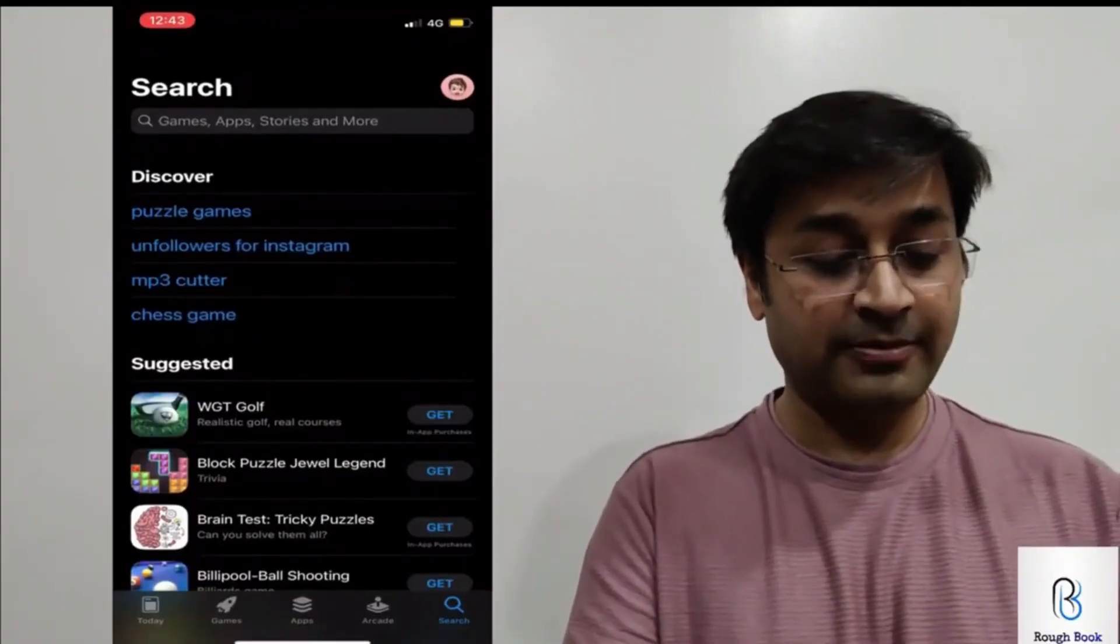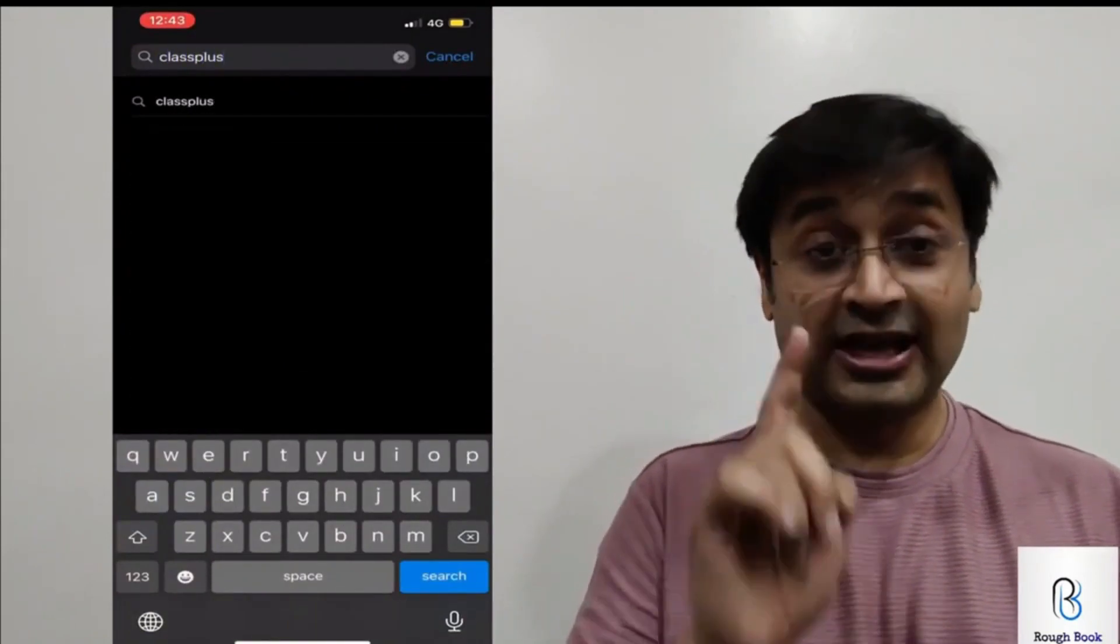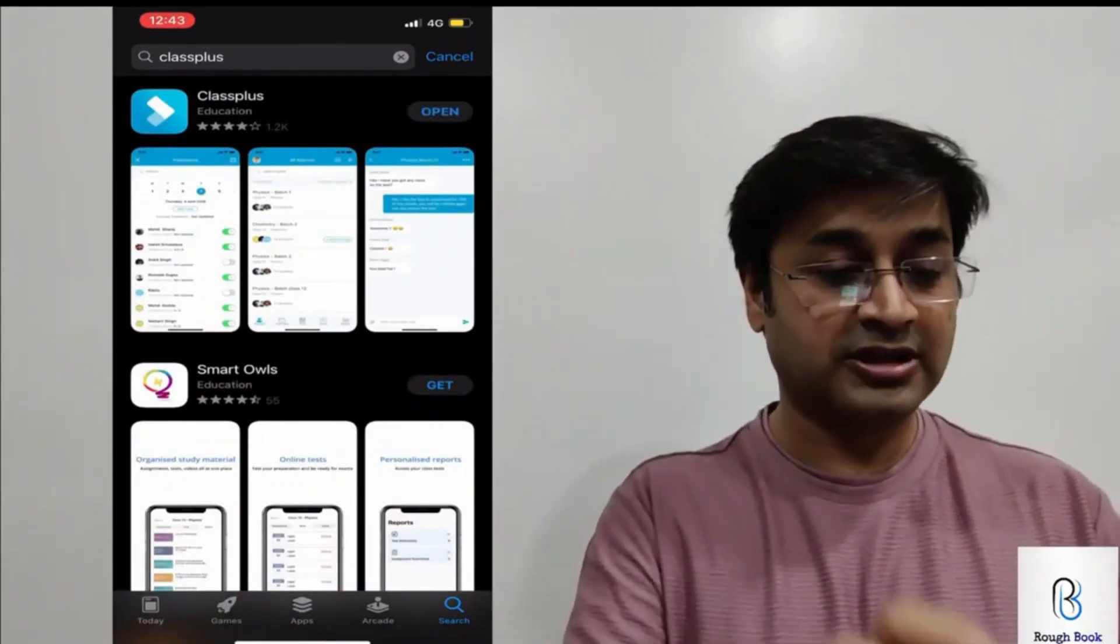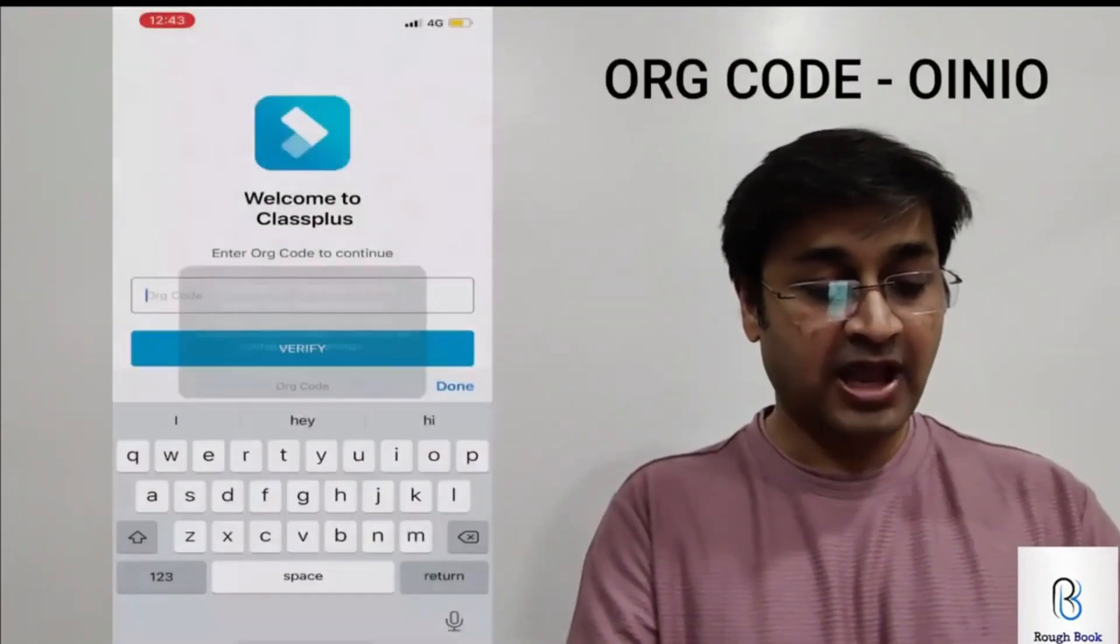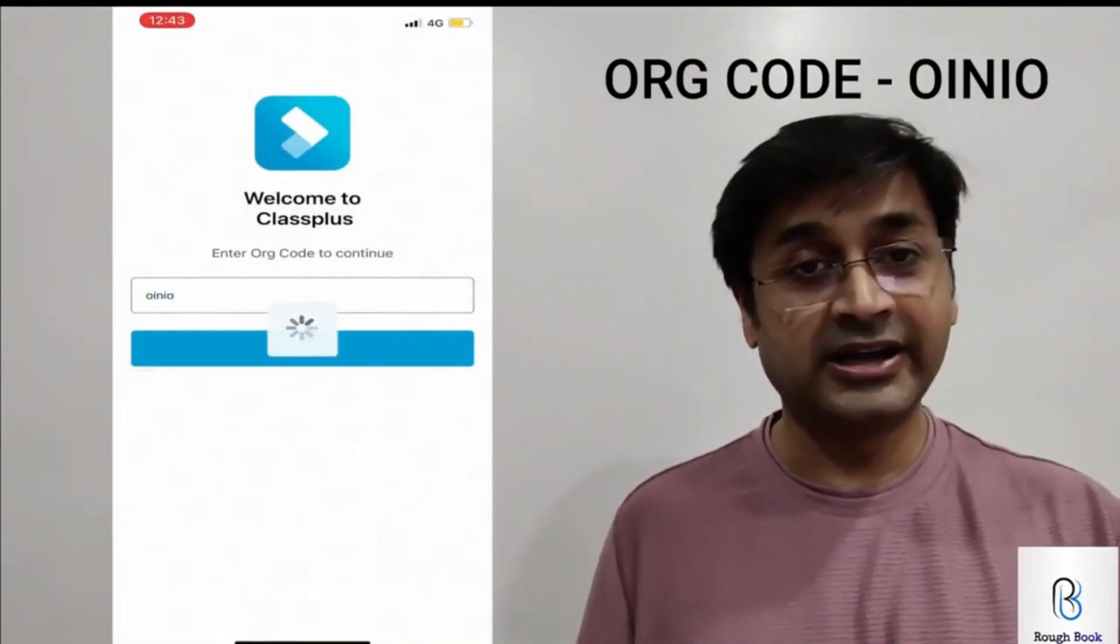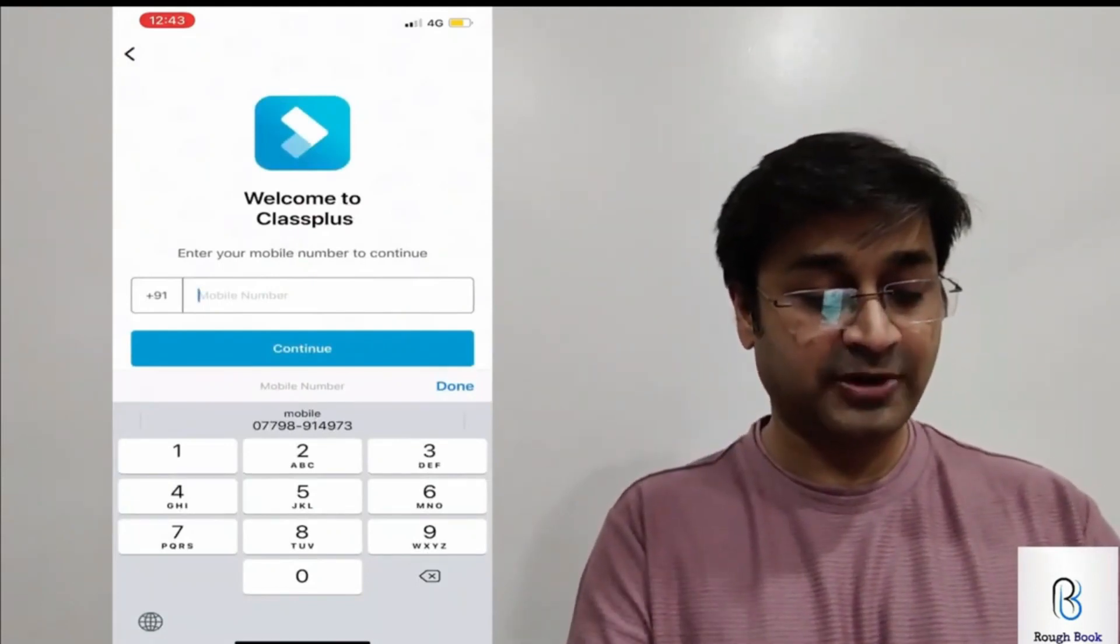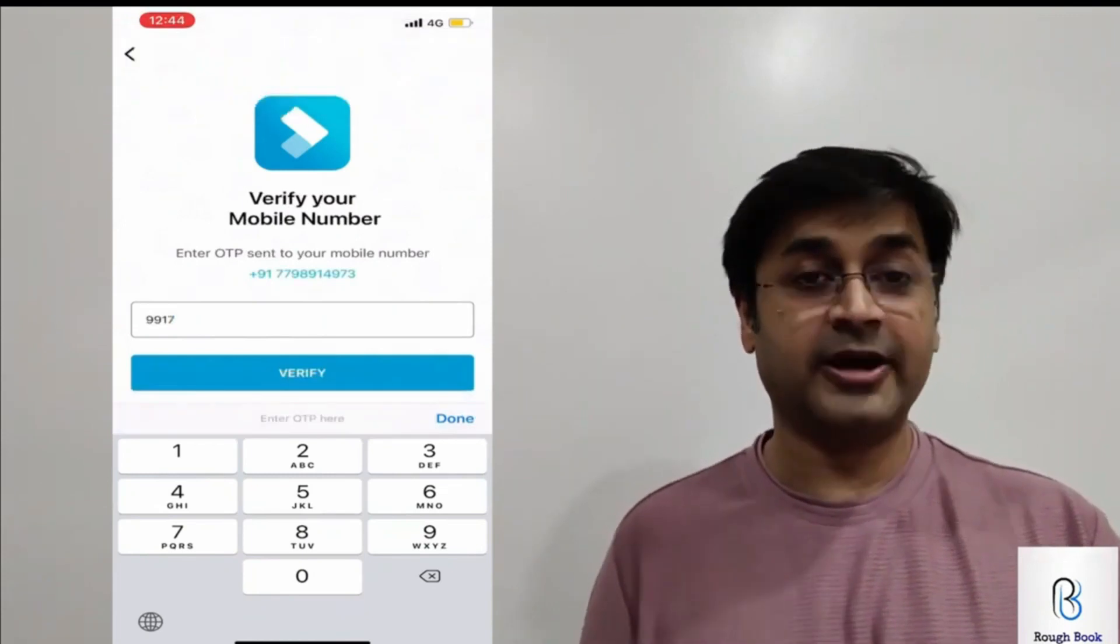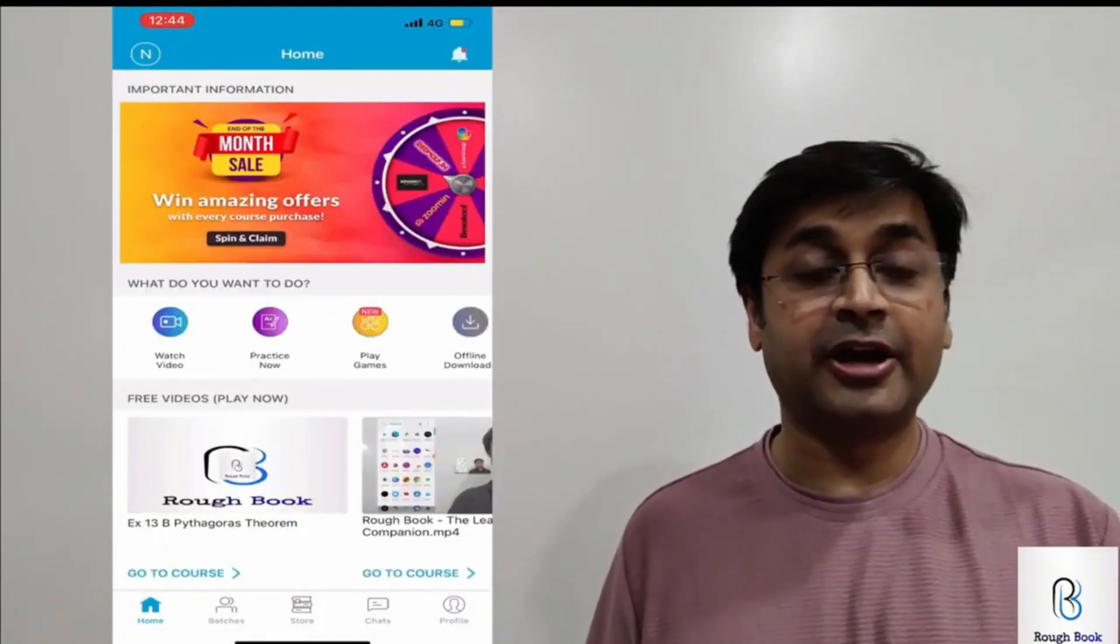On the app store on your Apple phone, you will have to type Class Plus. Don't look for Ruffbox, you'll have to type Class Plus. Once you get Class Plus, download the app. Once the app is downloaded, let's open it. On this the organization code is right over there. The organization code is OINIO, capital or small doesn't matter. It'll ask you for your mobile number, please punch in that. Once you get your OTP, punch in that and verify. And that's it, the entire Pandora box will be opened. So you have the Ruffbox app right over there on your fingertips now.